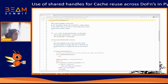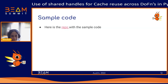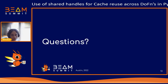You can also comment in the repo if you have questions. This was a sample code for using shared handles in the Python SDK. Finally, if anybody has any questions, please let me know.